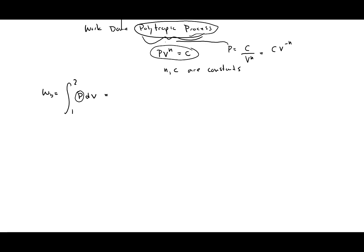Now I'm going to take this expression for pressure and put it into the equation for boundary work. So the integral becomes C times V to the negative N dV. When you integrate this, you get C multiplied by V to the power of negative N plus 1, minus V1 to the negative N plus 1, all divided by negative N plus 1.